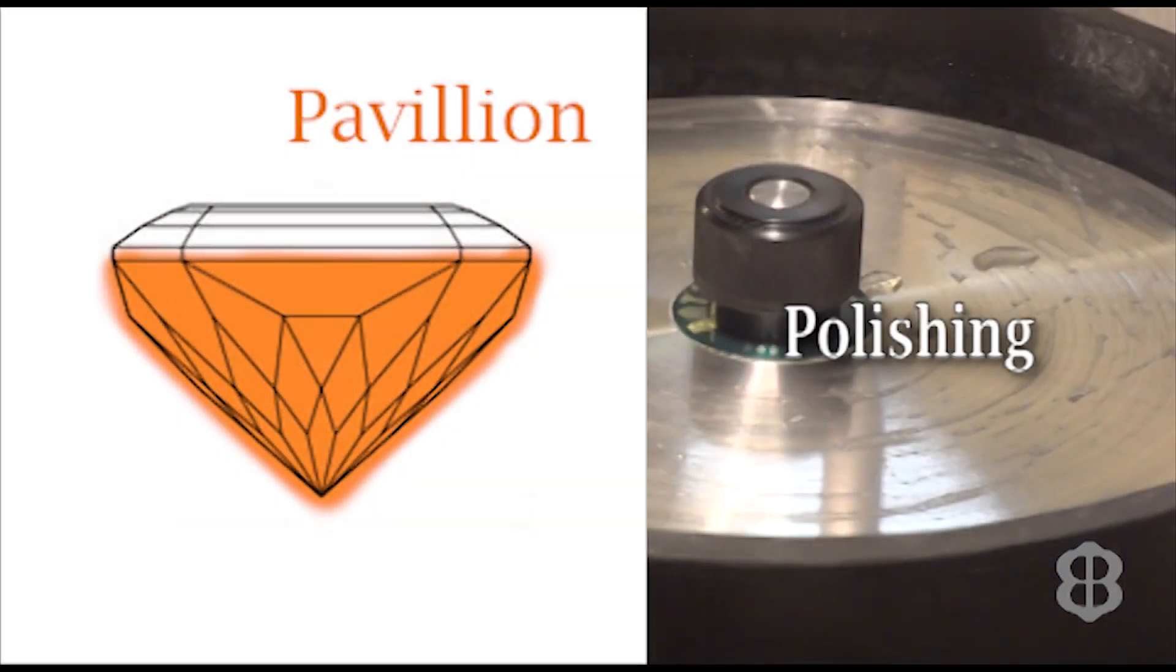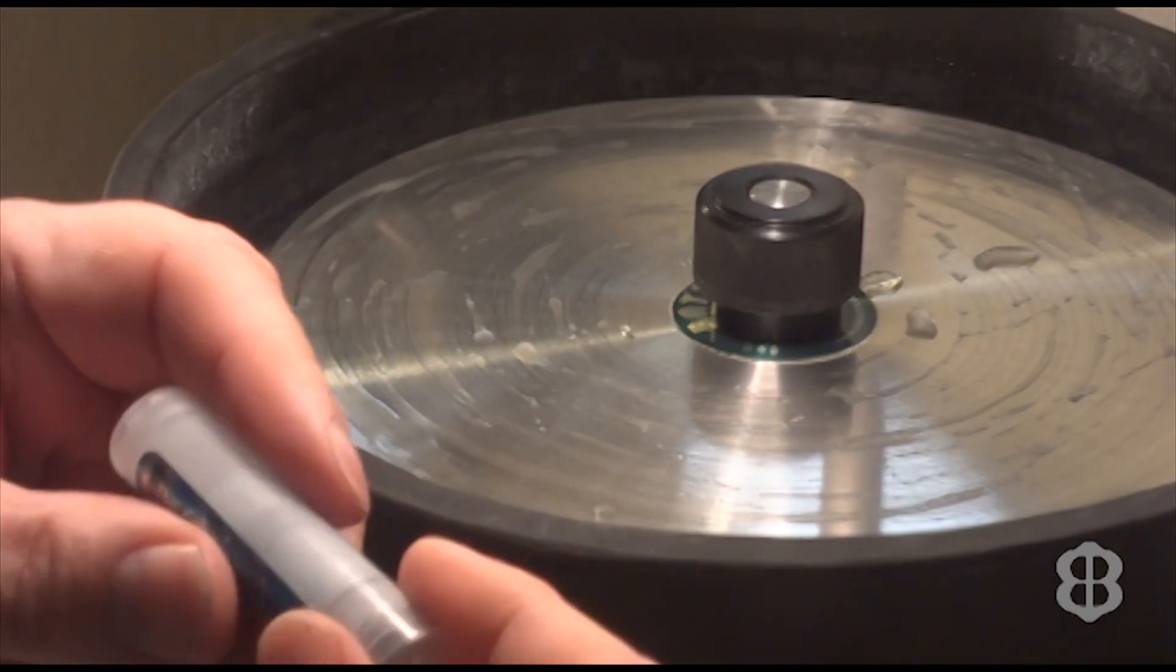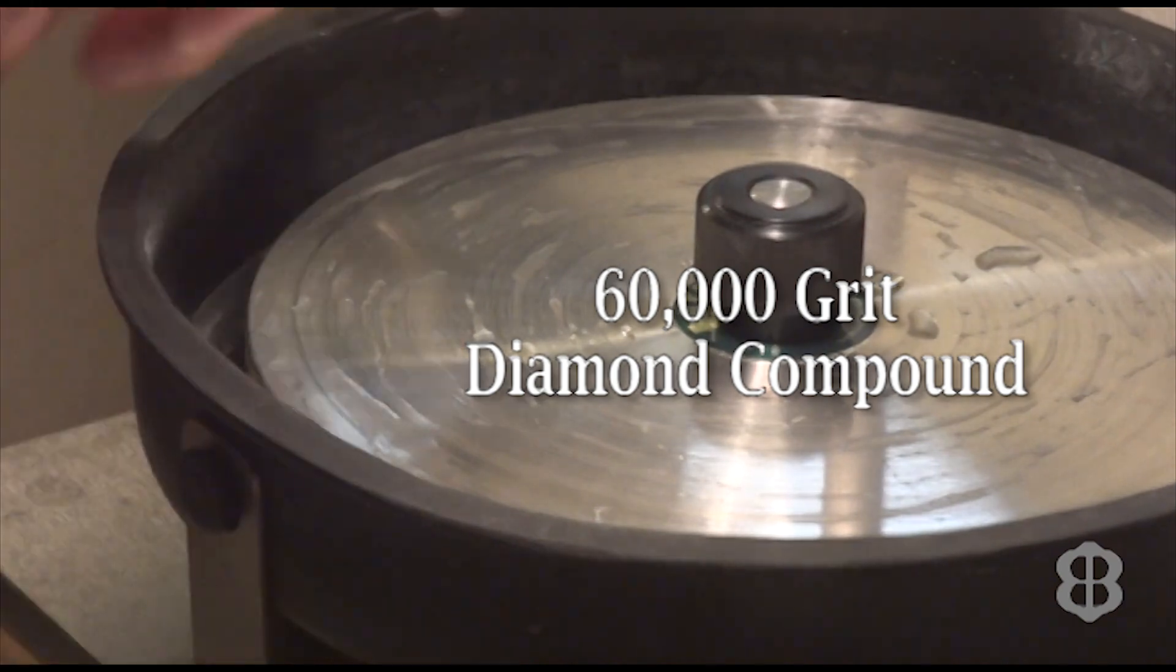We're almost done with the pavilion or the bottom half of our Imperial Zircon. We've got the bat lap ready to go. I'm charging it with a 60,000 grit diamond but I wanted to show you how we do that.